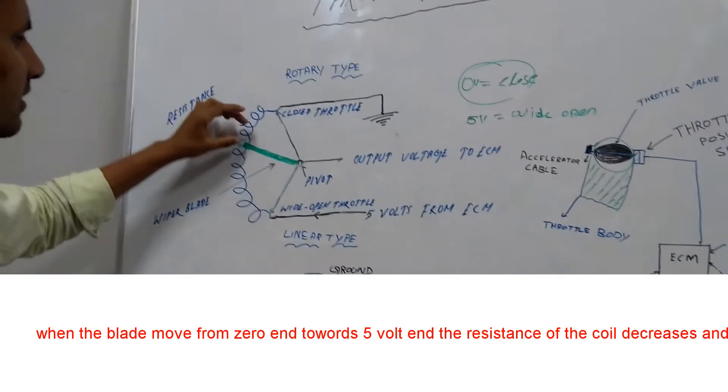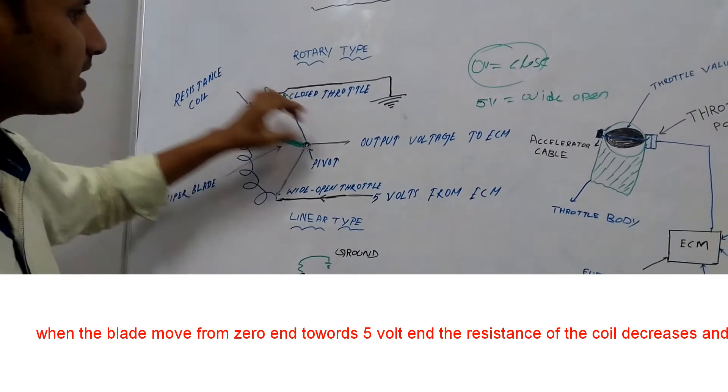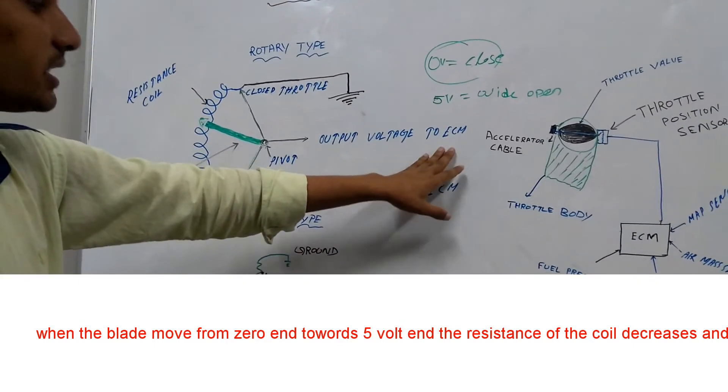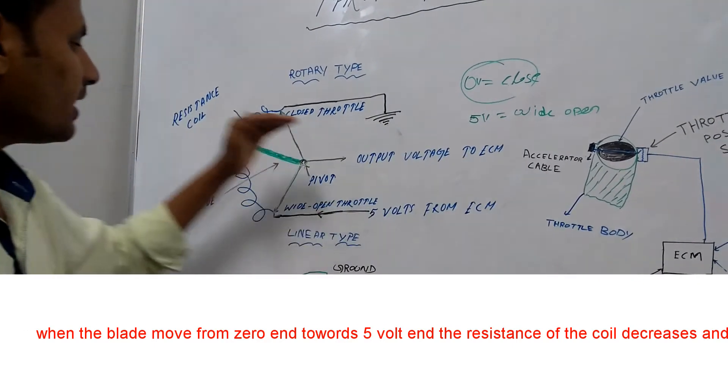Initially, when the valve is in close position, the wiper blade supplies 0 volt to the ECM or a small amount of voltage to the ECM.